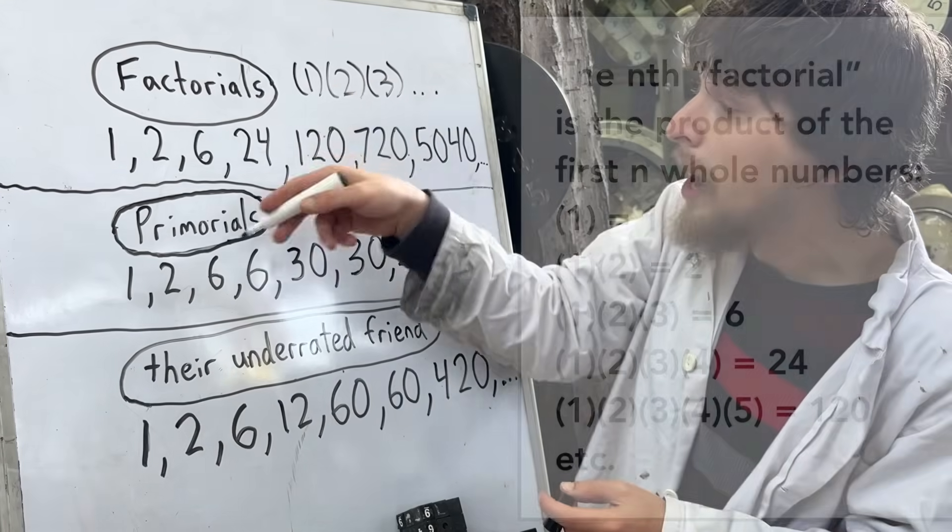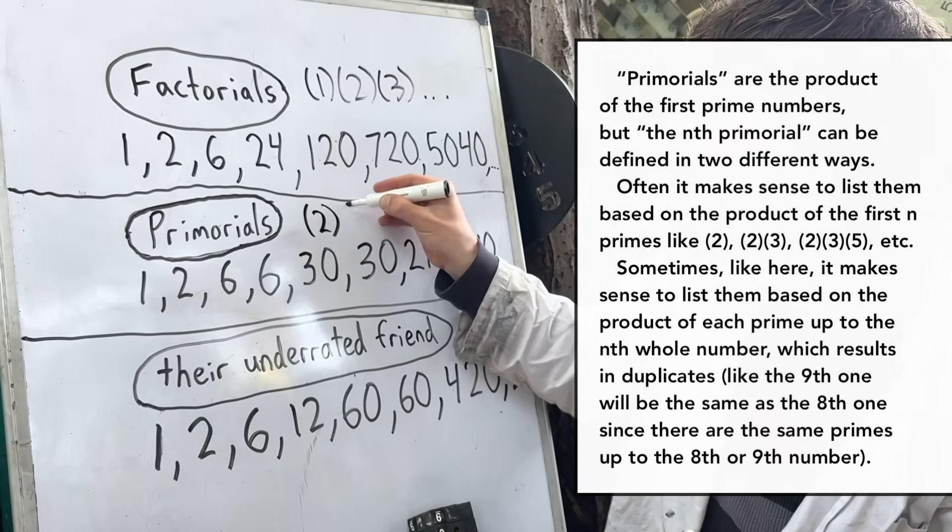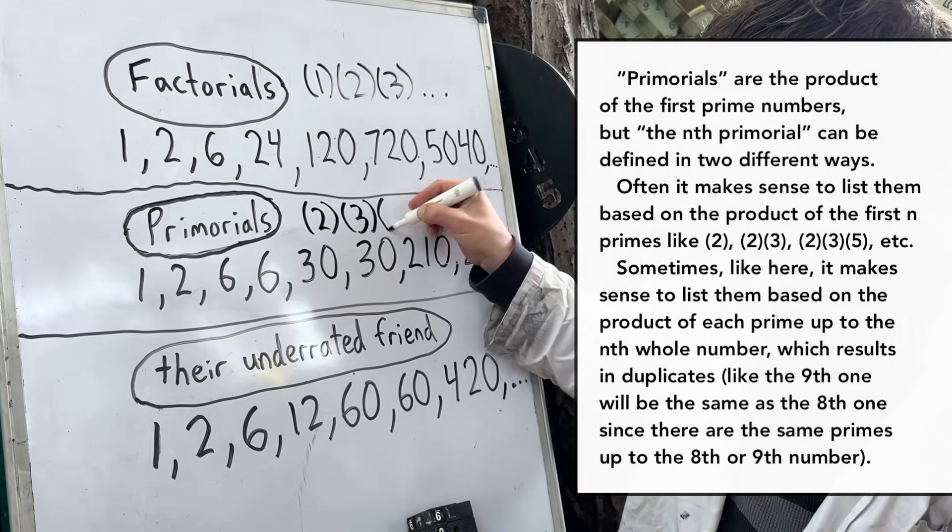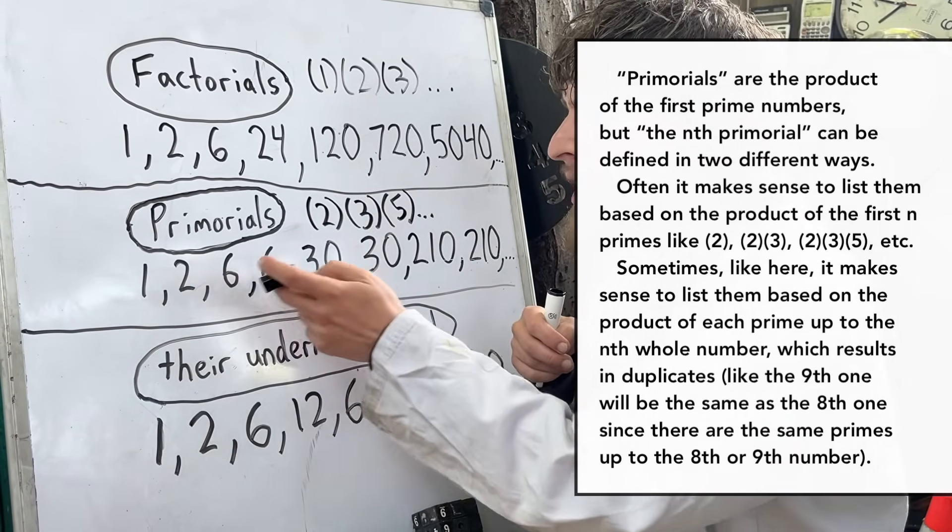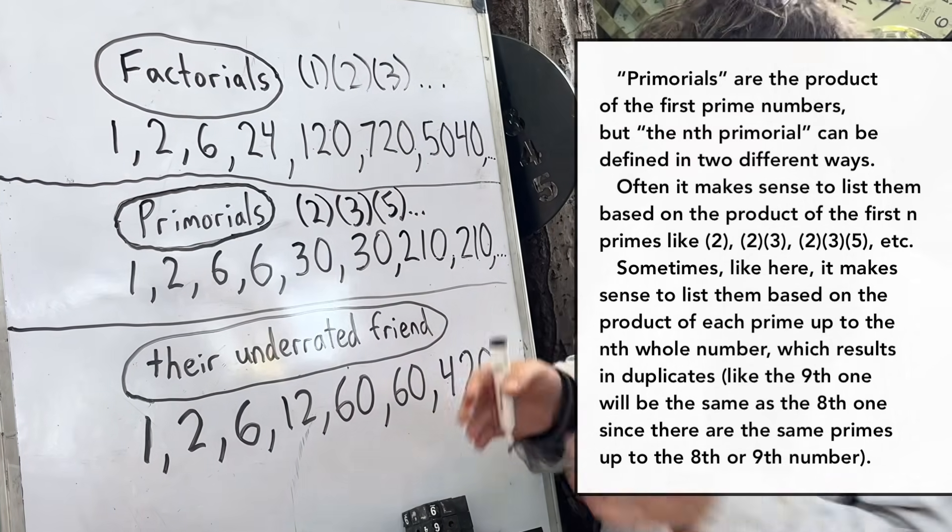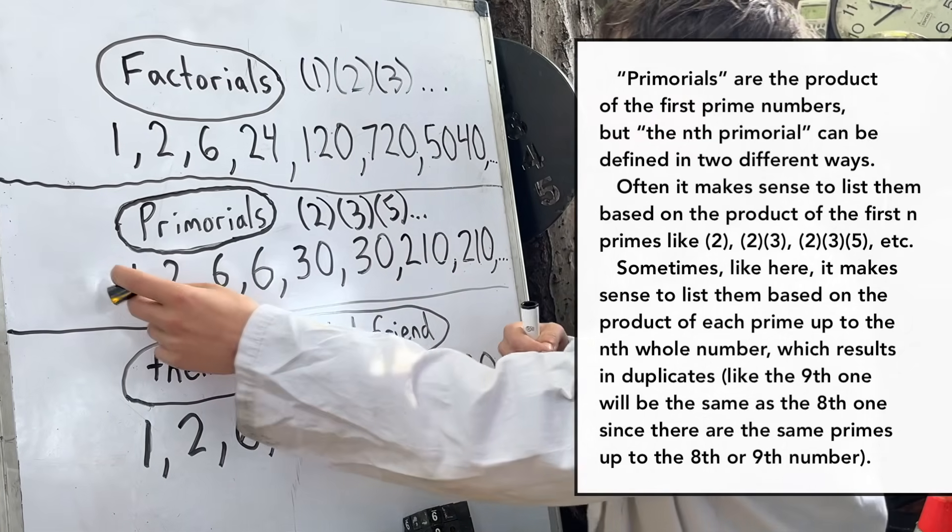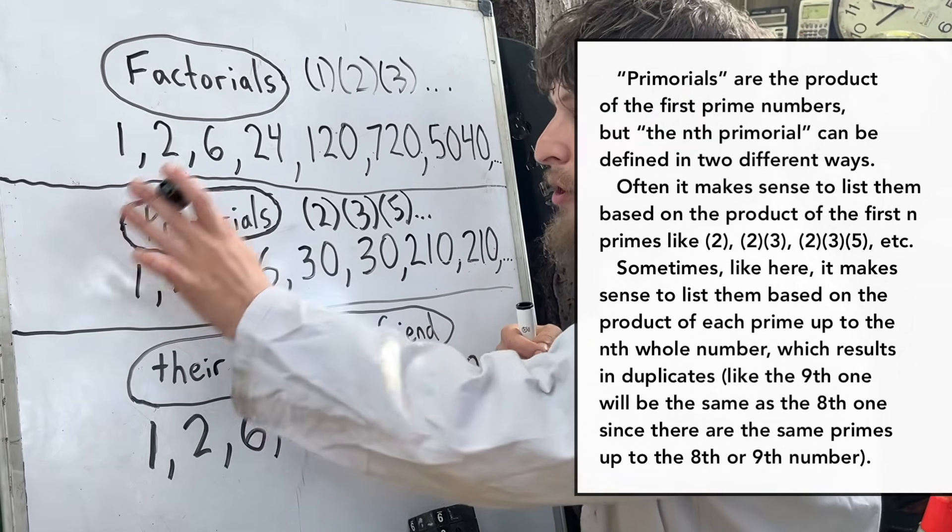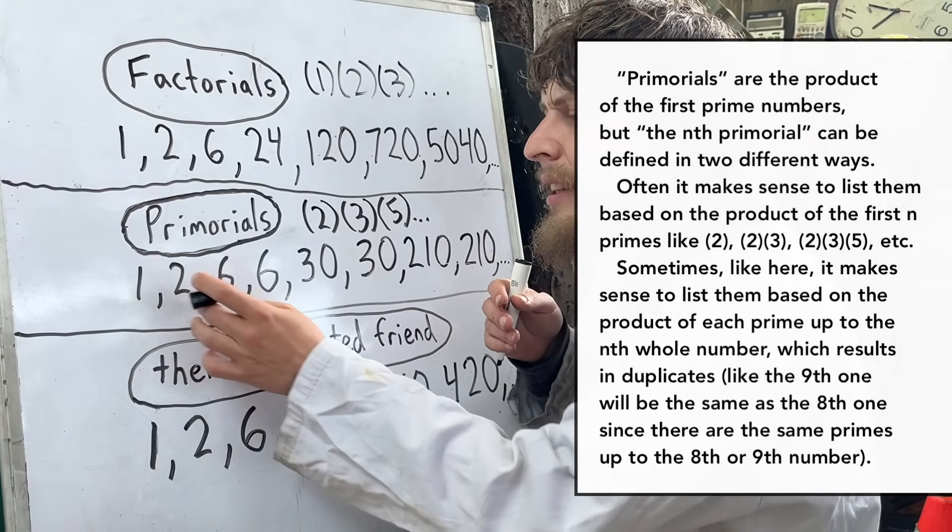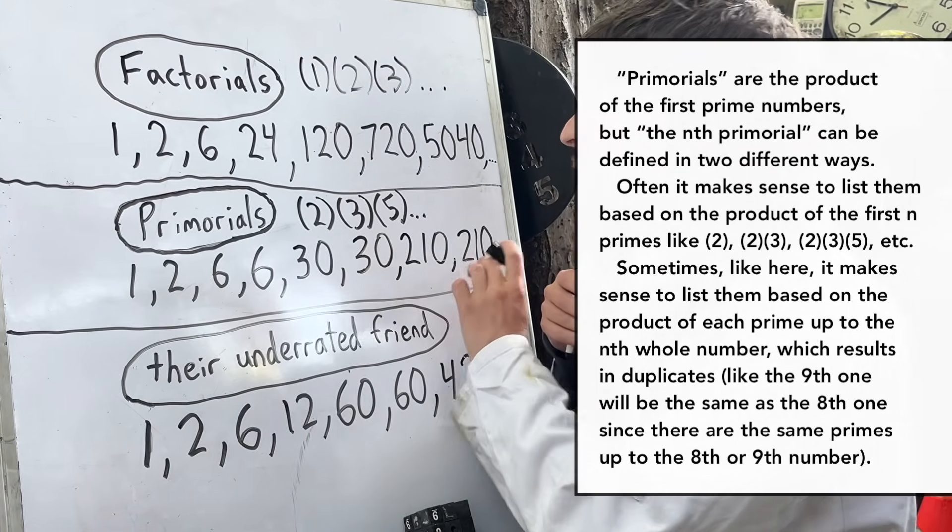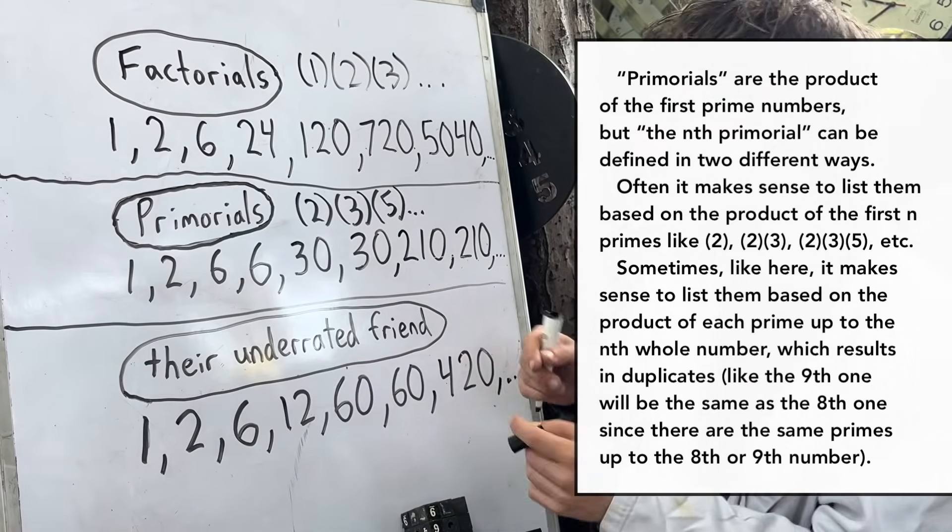And there's their friend, the primorials, where you just multiply the prime numbers up to some point. Often it's better to write these with each number appearing once, just showing each new distinct primorial, meaning I would have 2, 6, 30, 210 in my sequence and so on. But here I did list every single one we would get if we counted the primorial up to some certain whole number.